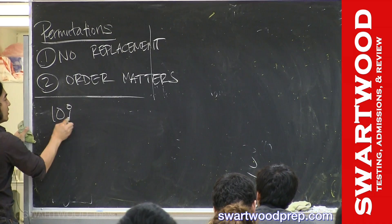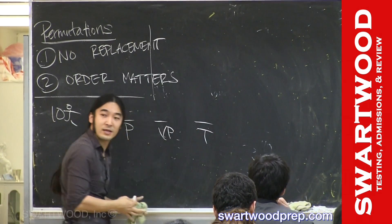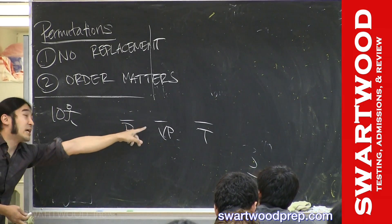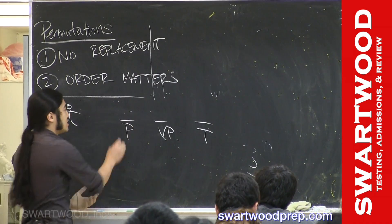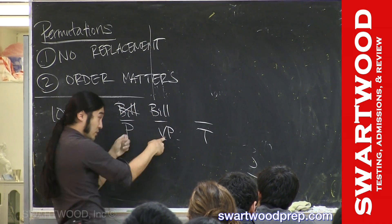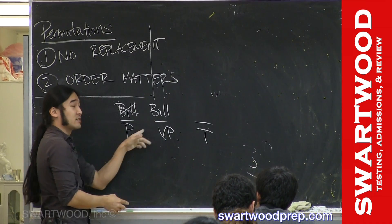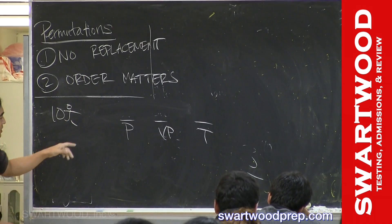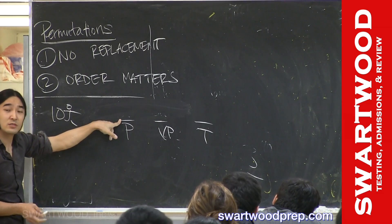I have ten people and three positions: president, vice president, treasurer. I don't explicitly tell you order matters, but when you see these labels, that's code for order matters. If I had Bill, Fred, and Bob, it makes a difference whether Bill is president or vice president — those are different positions. So order matters. The code for that is labels. Let's do it — being president is different from being vice president, those are labels.